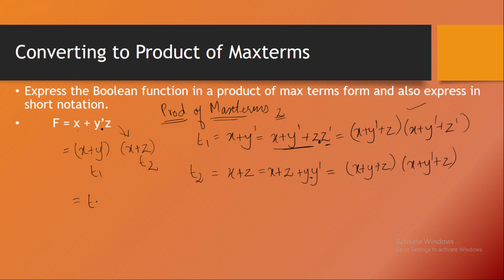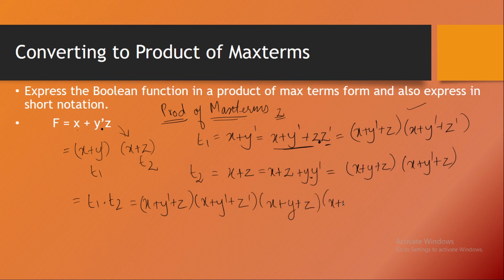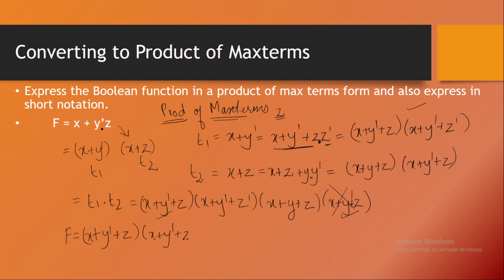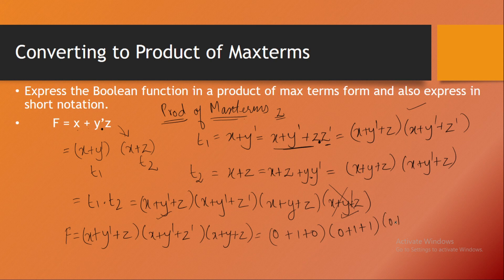The final solution is T1 into T2, which is: (x + y-dash + z) into (x + y-dash + z-dash) into (x + y + z) into (x + y-dash + z). Since (x + y-dash + z) is repeated twice, we remove one instance. The final function in product of maxterms form is: (x + y-dash + z) into (x + y-dash + z-dash) into (x + y + z). Writing in binary: (0+1+0), (0+1+1), and (0+0+0).